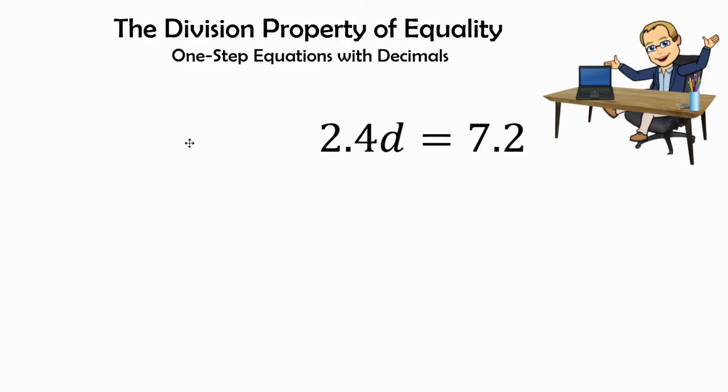Next, we have 2.4d equals 7.2. So with this equation, remember, doing the division property of equality? Because they're connected...